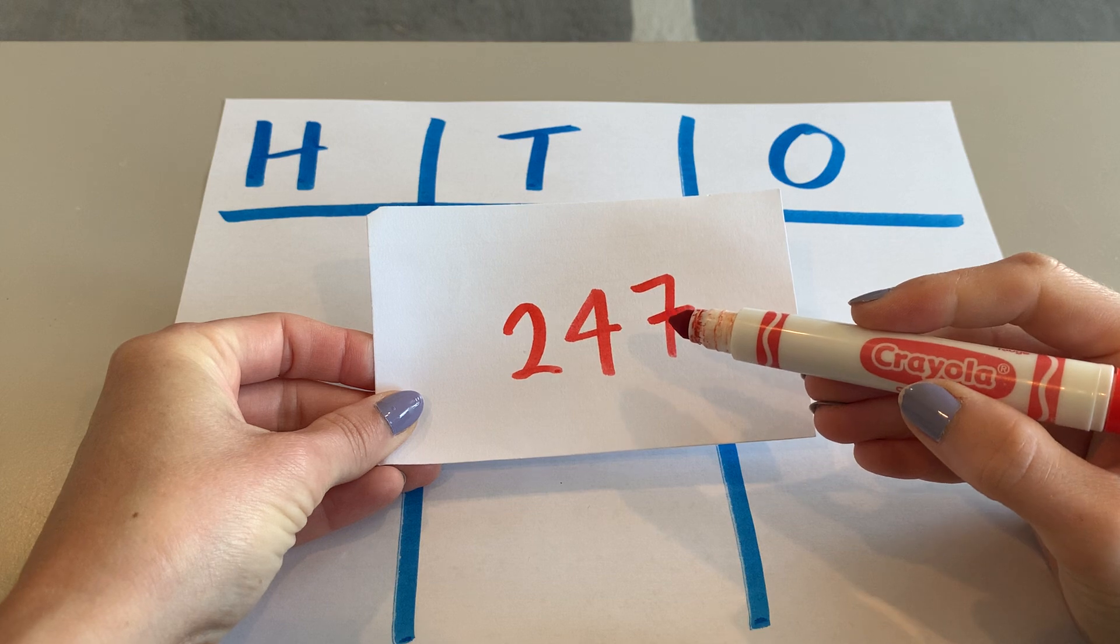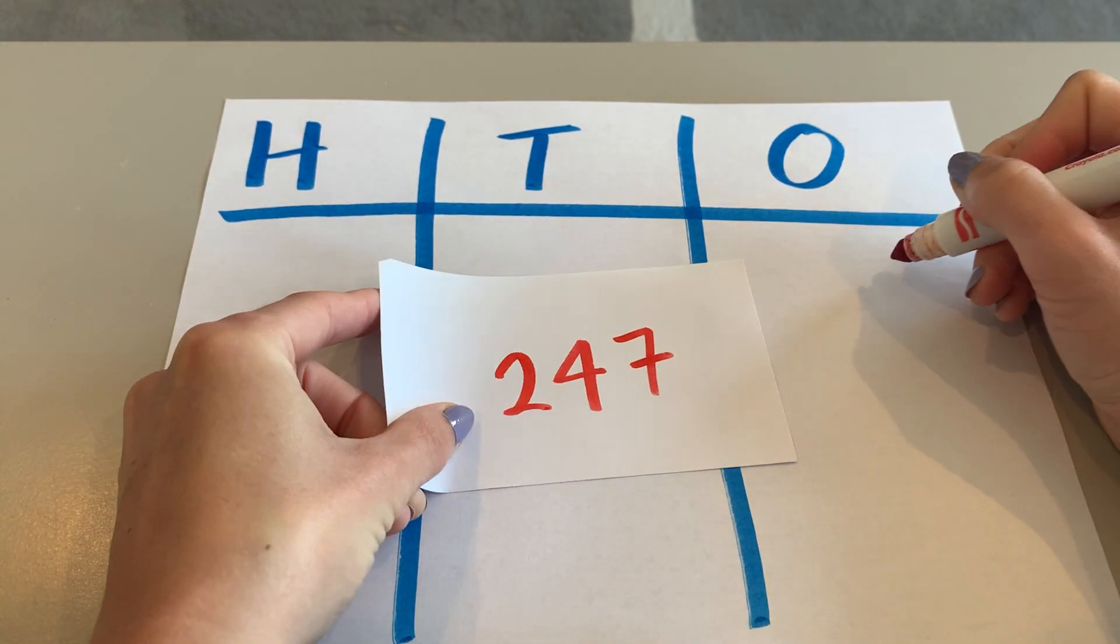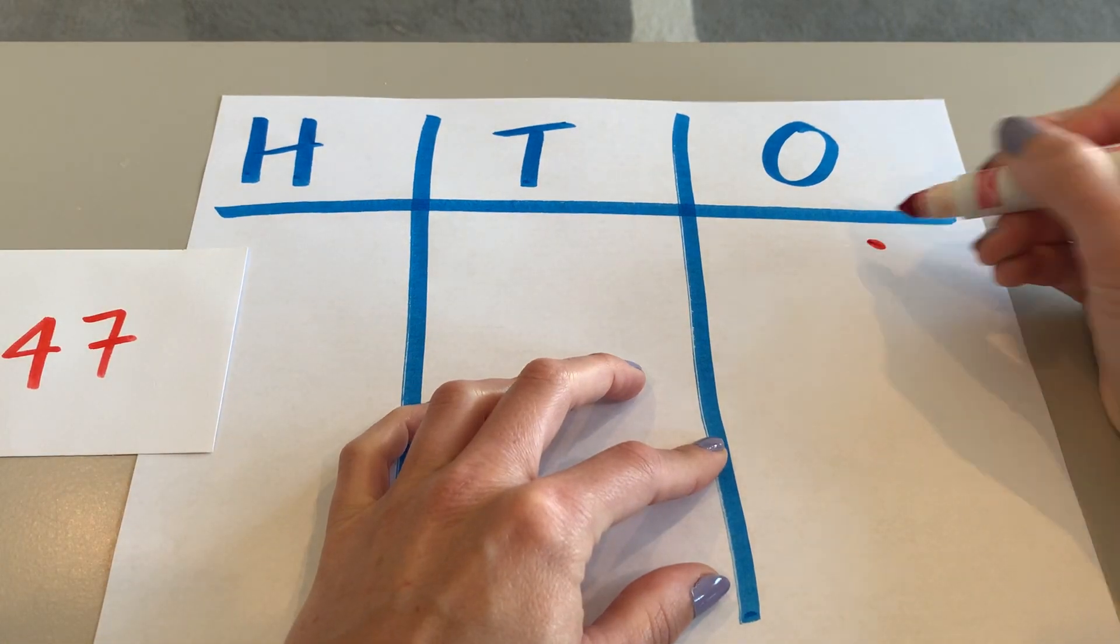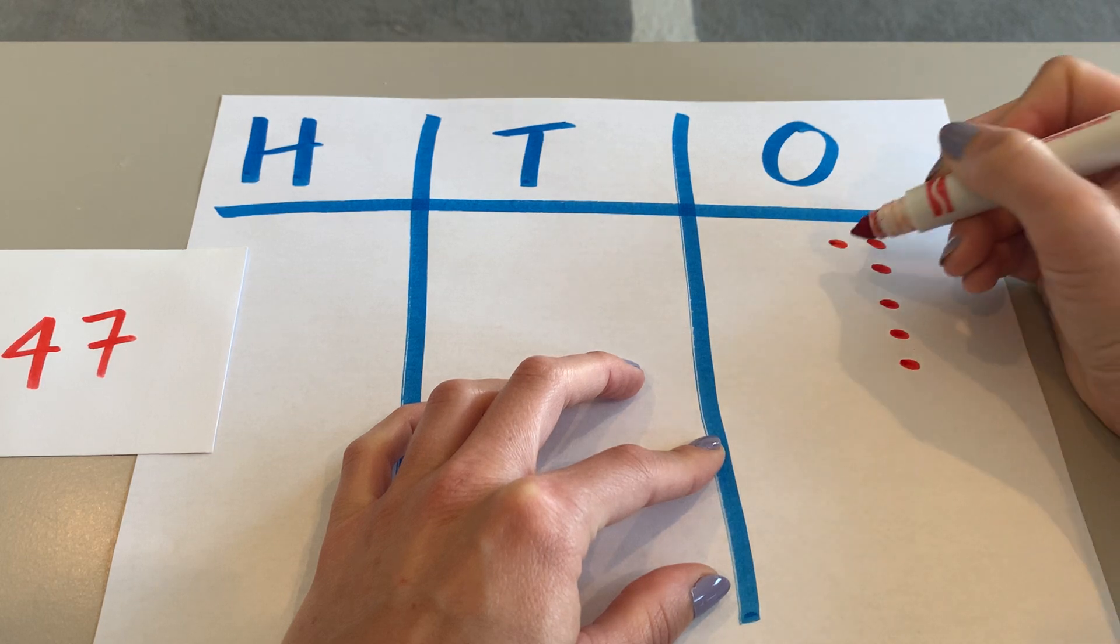Now the digit in the ones place is seven. So I'm going to draw seven ones. One, two, three, four, five, six, seven.